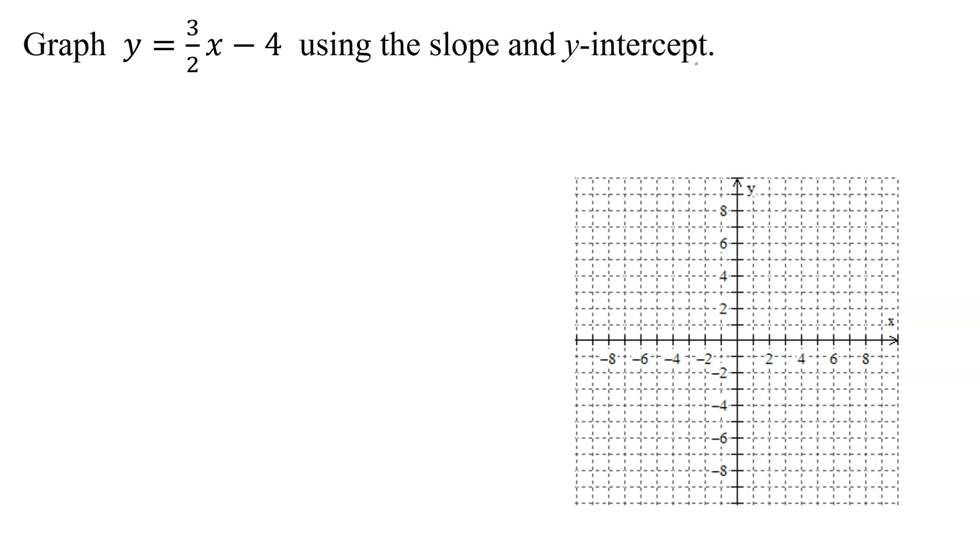Hopefully, you remember the slope-intercept form of a straight line. And here it is, y equals mx plus b, where m, the coefficient of the x term, is the slope, and the y-intercept is an ordered pair. Its x-coordinate is always 0, and the y-coordinate comes from b in this equation.